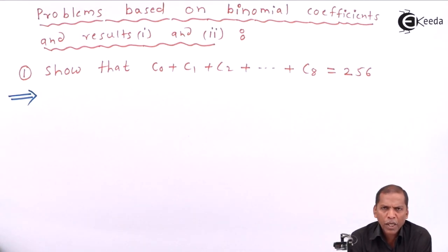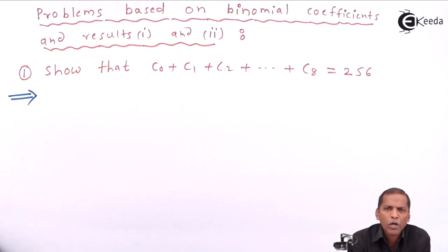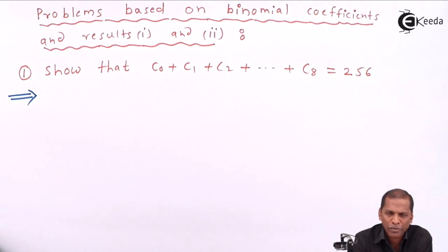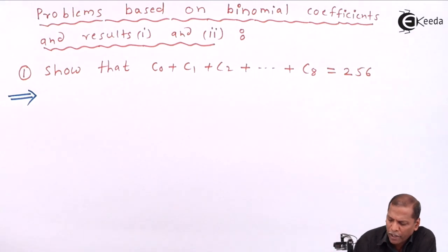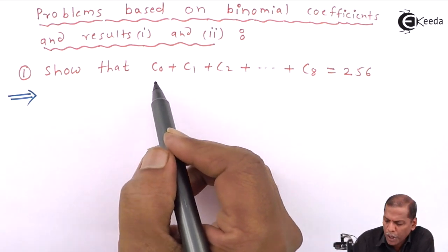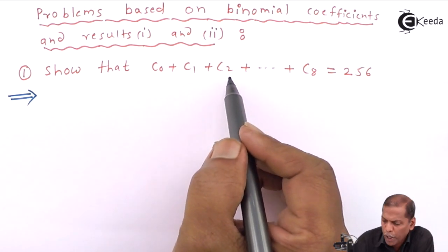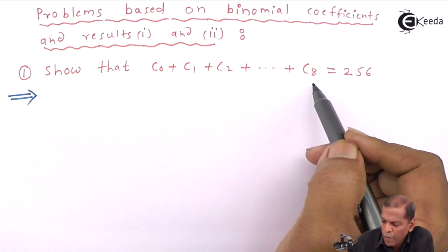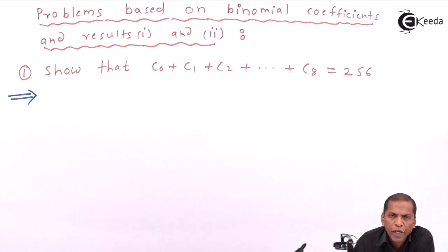Hello friends. Now we will see problems based on binomial coefficients using Result 1 and Result 2 of the chapter on method of induction and binomial distribution. Problem 1 is: show that c0 plus c1 plus c2 plus dot dot dot plus c8 is equal to 256.